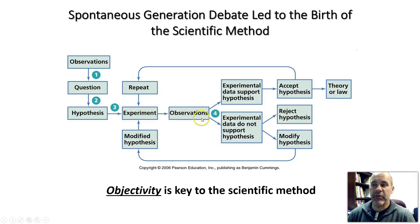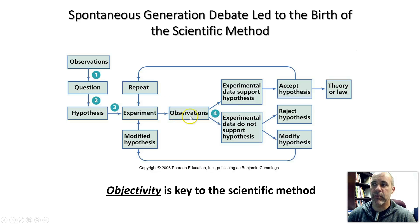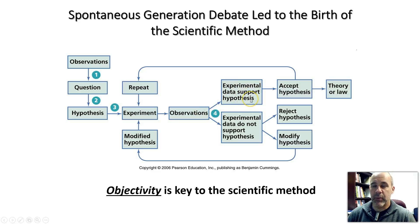When you do an experiment, you make observations about your results and try to keep your personal biases and emotions out of it. You look at the results, interpret them, and figure out whether your data support the hypothesis or not. If your data support the hypothesis, then you can accept it.